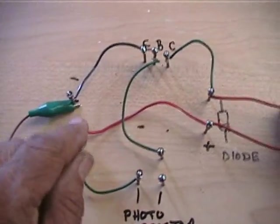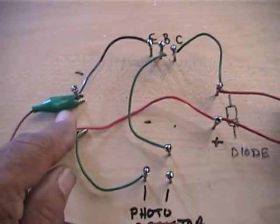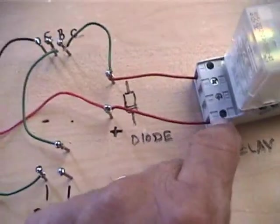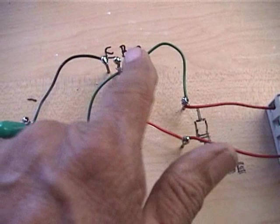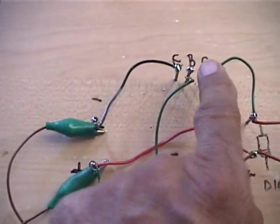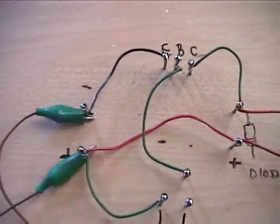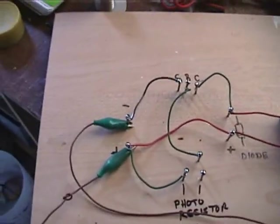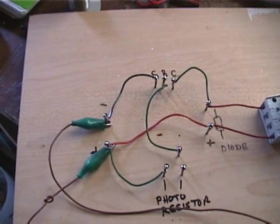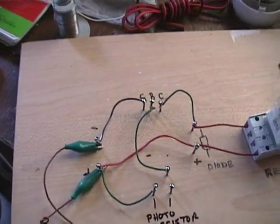Then, as you may recall, the positive side goes to the relay coil and the other end of the coil goes here. If I now connect this end of the coil here, it is going to activate the relay. And I am going to do just that.